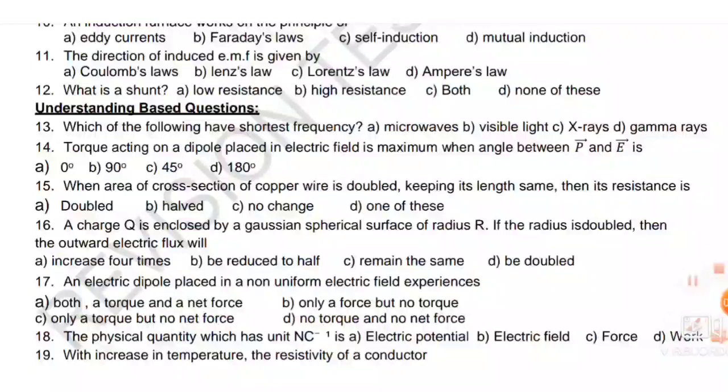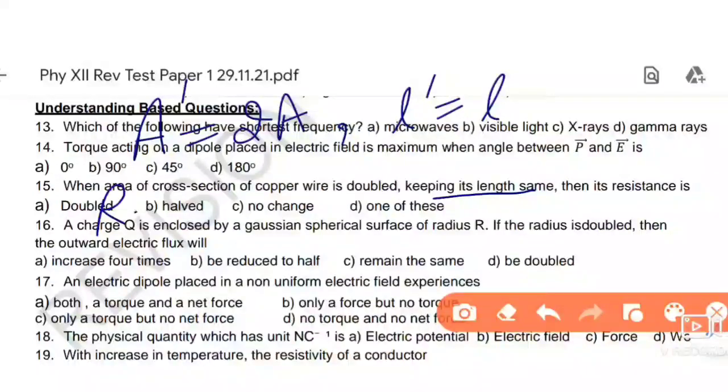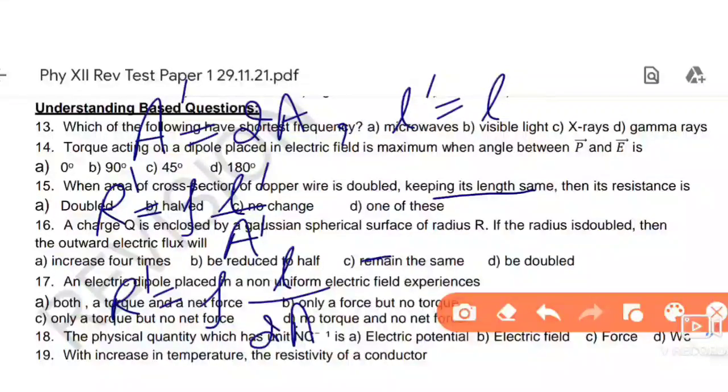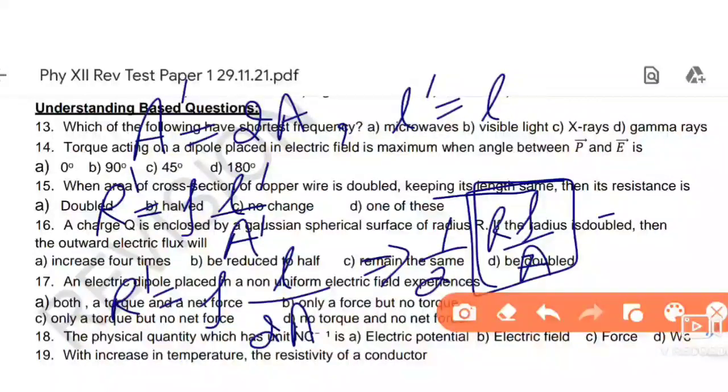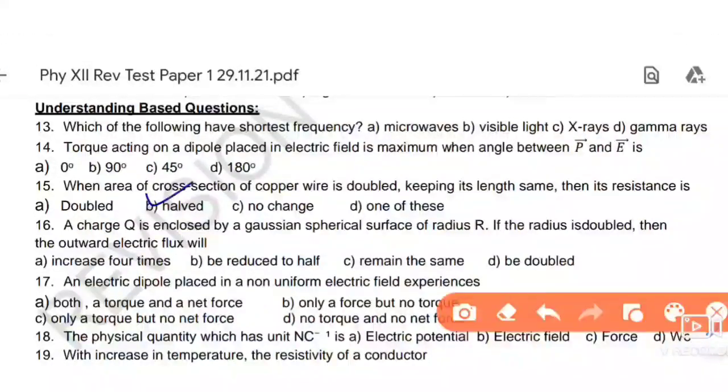Question number 15: When area of cross section of the wire is doubled, double it to 2a, keeping length same. Then what is the resistance? R equals rho l over a. R dash equals rho L dash over a dash, which is 2a. This becomes half r, rho over a. So R term is R over 2. R over 2 means half. Answer B option is the right answer.